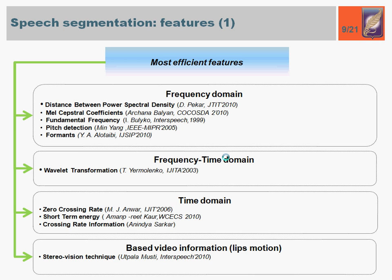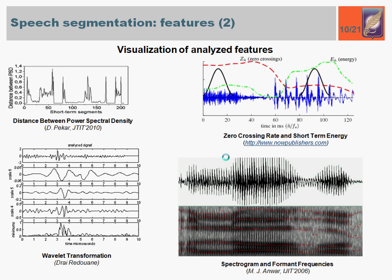There is a large number of different features for signal presentation, but all of them can be divided into four categories. This classification is based on the domain in which analysis is performed. On the next slide, it is shown how analyzed features can be visualized. In the top left corner, distance between power spectral densities is presented. In the top right part, zero-crossing and short-term energy curves are plotted. Also, wavelet transformation and formant analysis are widely used, shown in the bottom left and bottom right corners respectively.